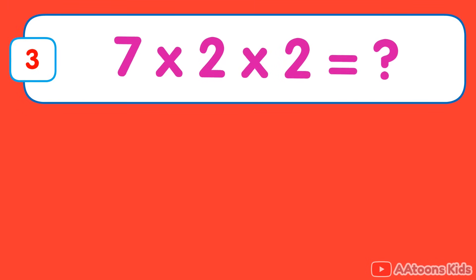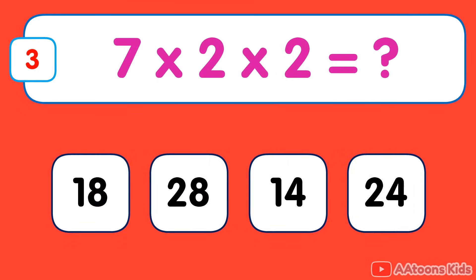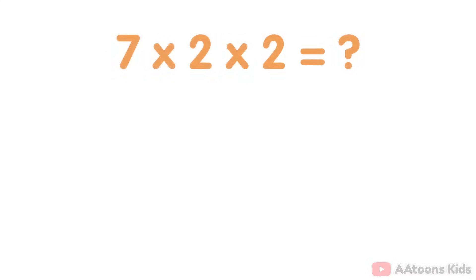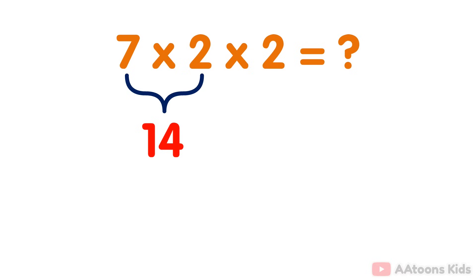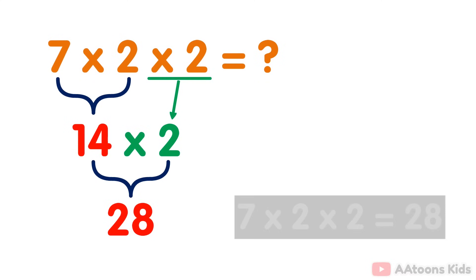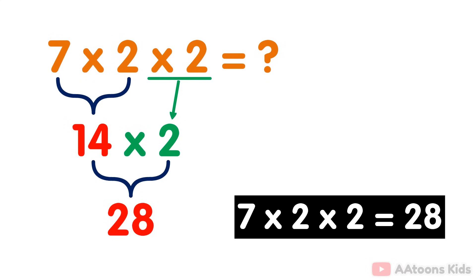7 multiplied by 2 multiplied by 2. The answer is 28. Simply multiply the numbers 7 and 2 which equals 14. Then you multiply the result 14 by 2. You will get 28. Therefore, the answer to 7 multiplied by 2 multiplied by 2 is 28.